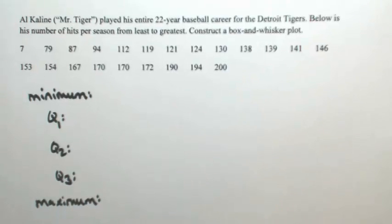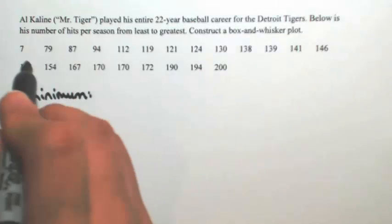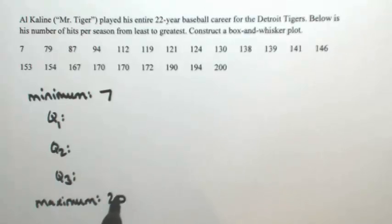The minimum and the maximum are easy enough. It's literally the smallest number and the largest number. So the minimum is 7 and the maximum is 200.